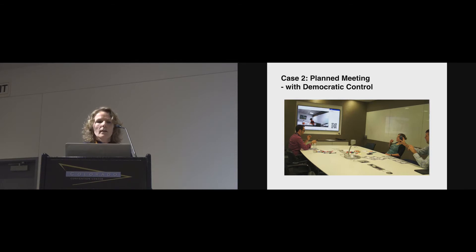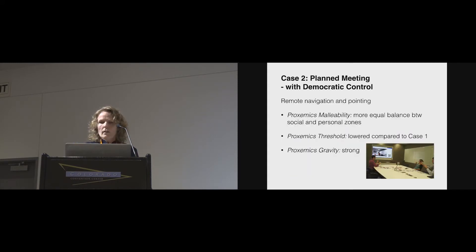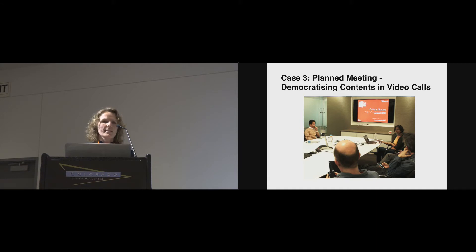So, here's an example from another system, which was designed to actually loosen up the situation a little bit. So, here, this is a system which has democratic control in the sense that every participant on their mobile devices can actually preview contents from the presentation and also contribute to the navigation of these contents. And through deploying this system, it was found that in terms of the proxemics malleability, this spurred more discussion amongst people, co-located people, on the more personal level. So, there was a more equal balance between the social and personal zones. And the threshold was lowered compared to case one. Still, there was a strong gravity towards this more presenter setup.